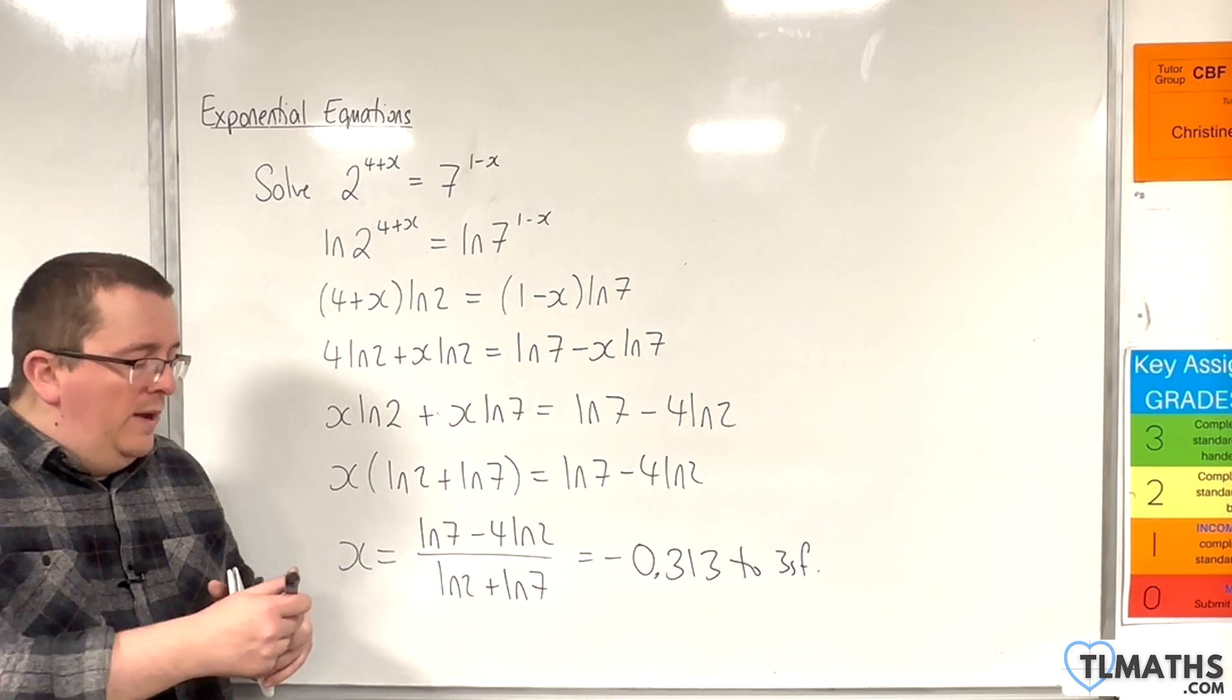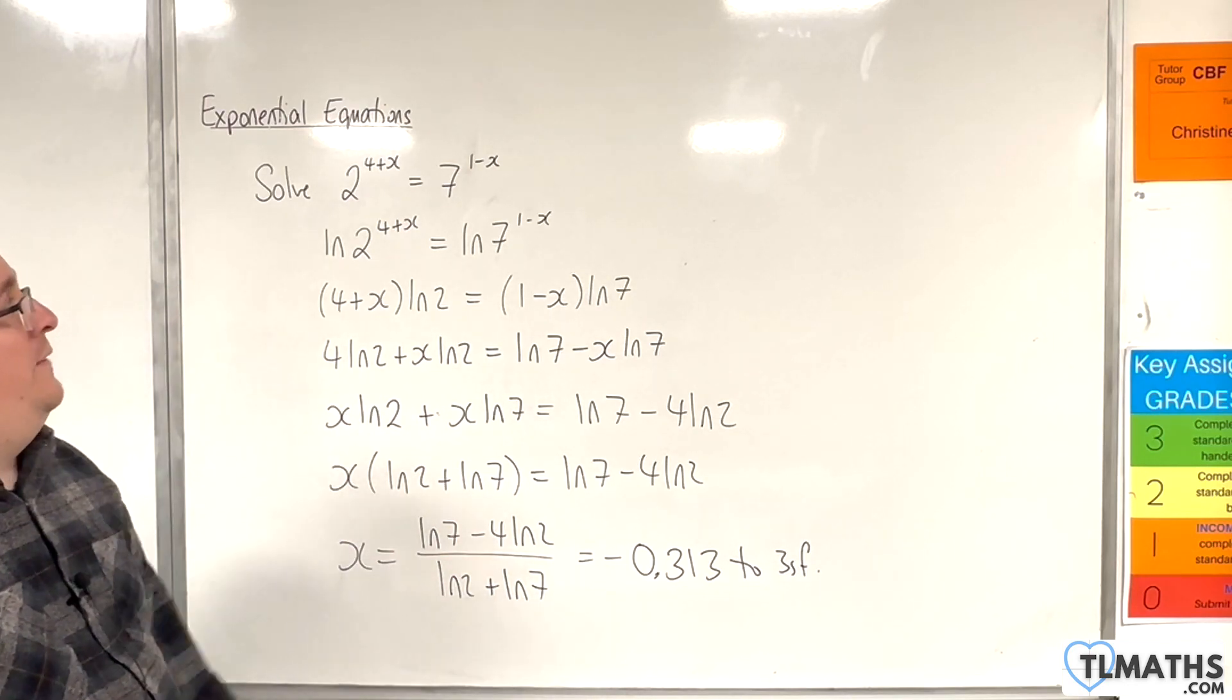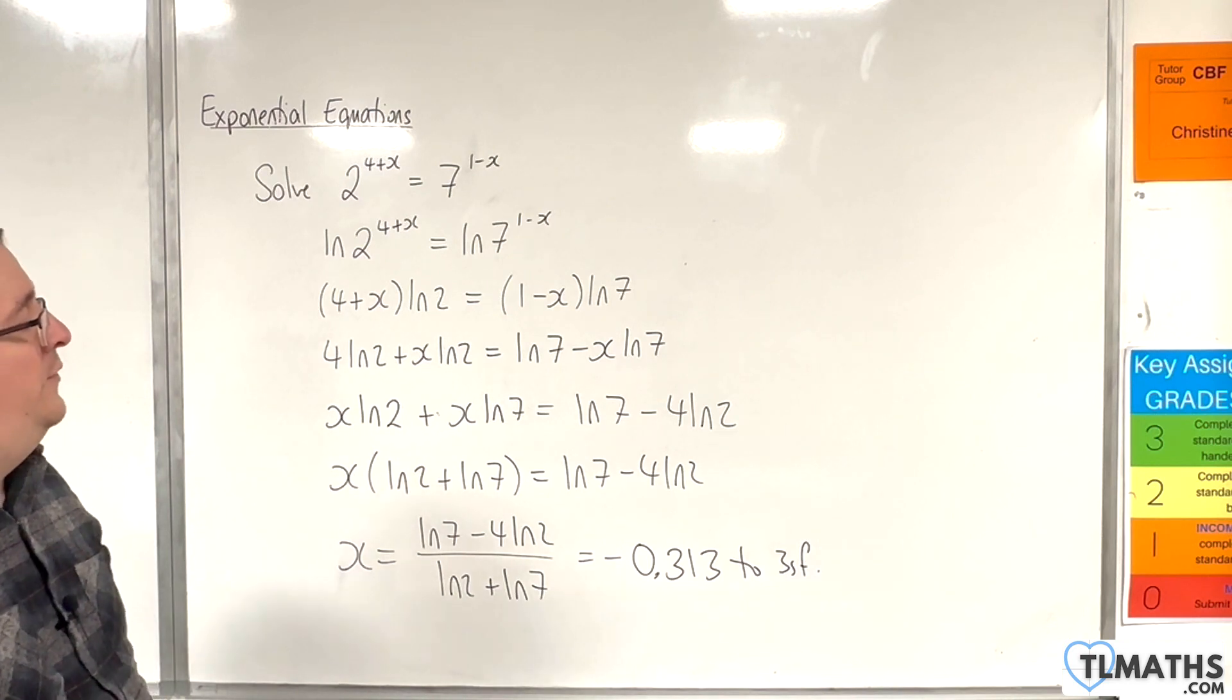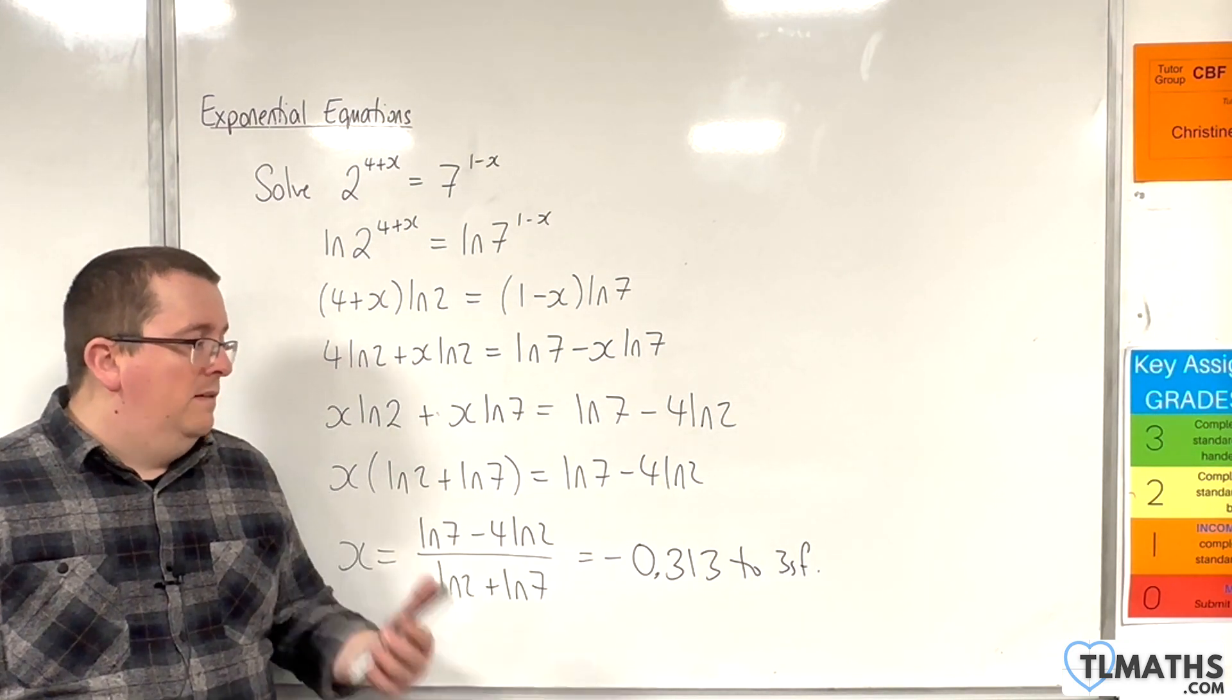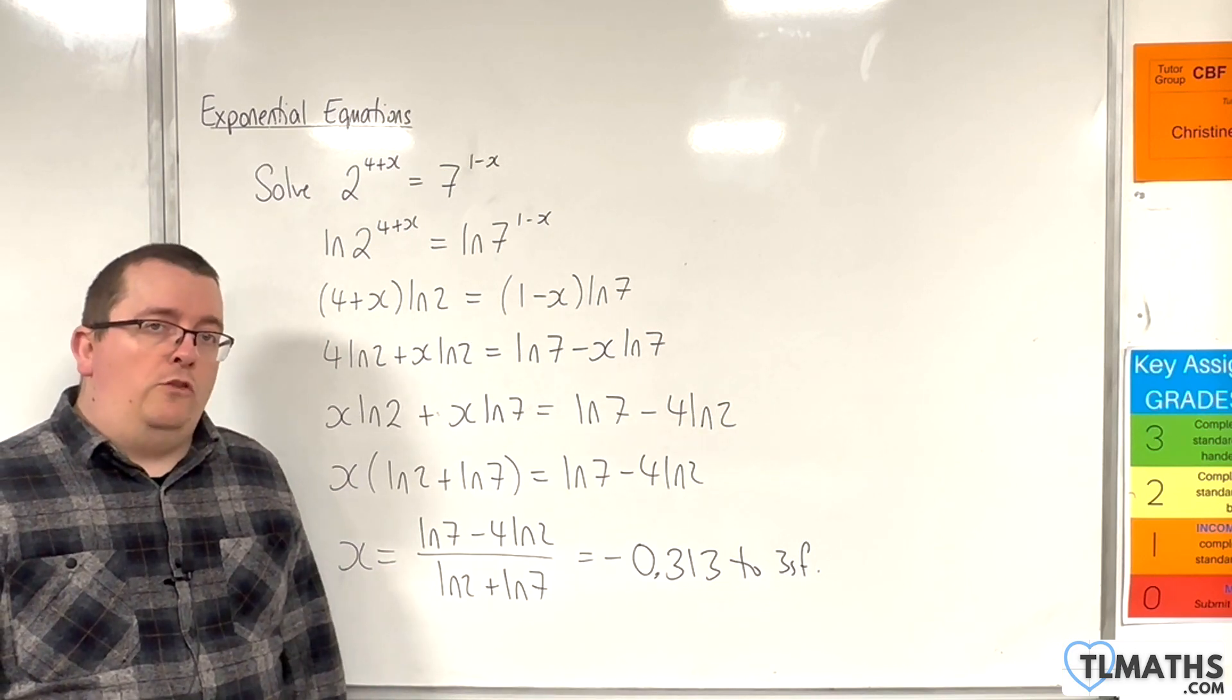Okay, so if you chose to use base 2 or base 7 or an alternative base, and you've got down to minus 0.313, then you know that you've got the right answer.